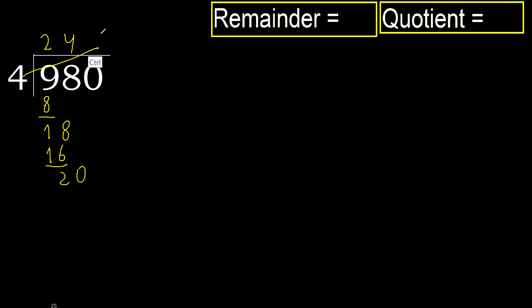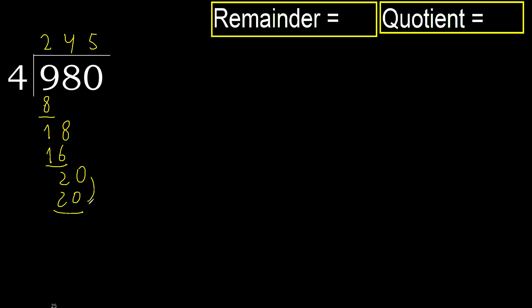Next: 4 multiply by 5 is 20 — not greater. Subtract: 0.